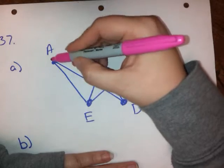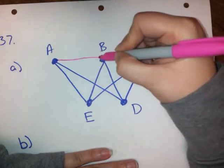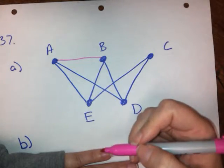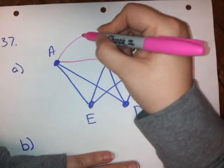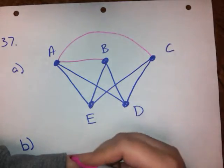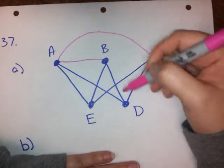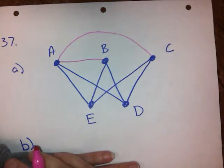Let's start with A and make sure that A is connected to everything else. A is not connected to B, so we need to connect it to B. A is not connected to C, so we need to connect it to C. A is already connected to D, it's already connected to E, so we're good to go.